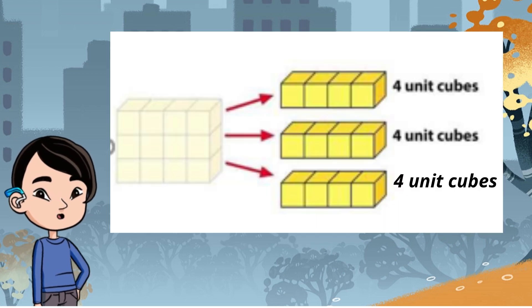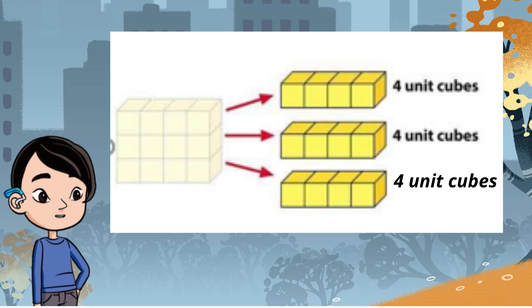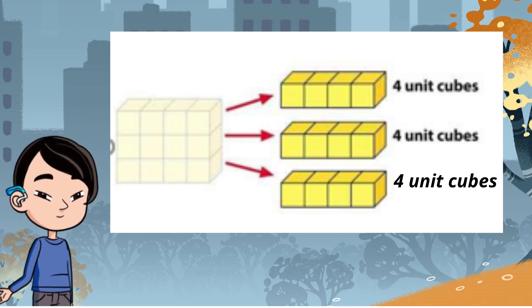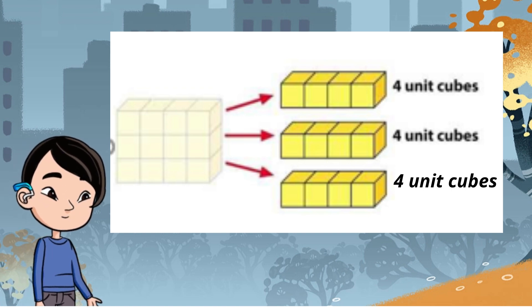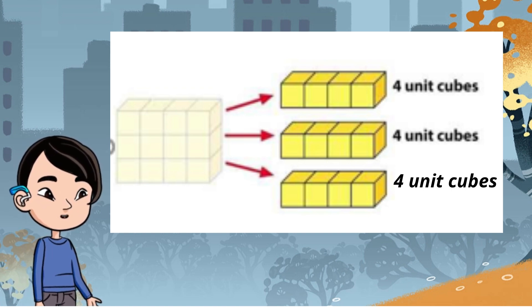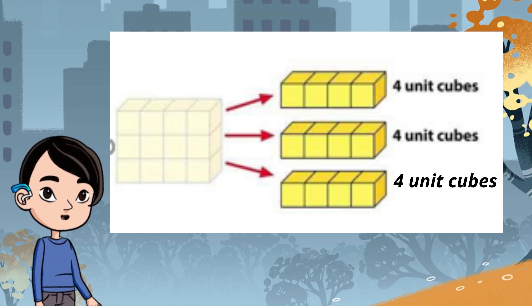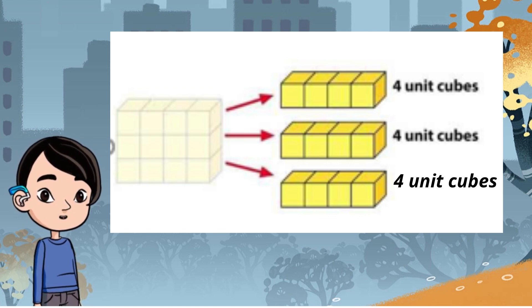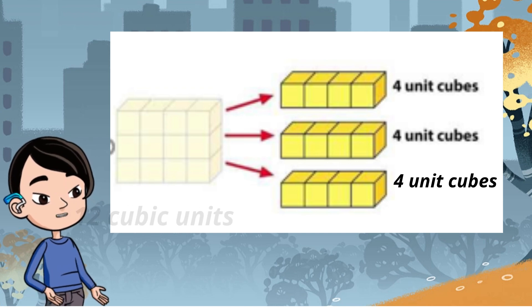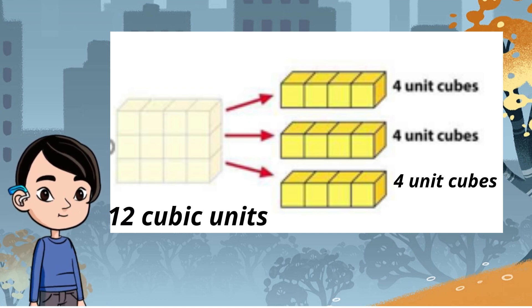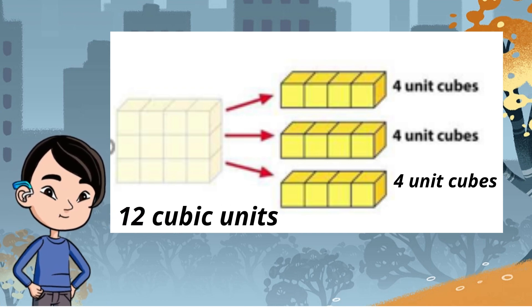Take this rectangular prism, for example. To find the volume, you can fill it up with unit cubes, then count how many unit cubes were used to fill it up. Three layers with four unit cubes in each layer — the volume is 12 cubic units. This is one way you can find volume.